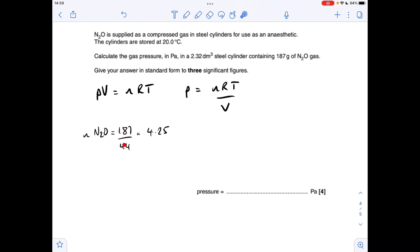So mass over MR, that's coming out at 4.25 moles, so we'll just sub the numbers into the rearranged ideal gas equation. So we've just got to be careful with our unit conversions here, so moles is 4.25, R is 8.314.